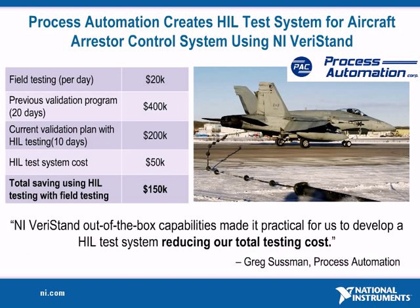This was exactly the case for a process automation customer who asked them to implement a new control system to retrofit their aircraft arrestor system. The new embedded control device is part of a hydraulic control system that dynamically adjusts the resistance of a cable that is caught by the tail hook of an aircraft when landing.